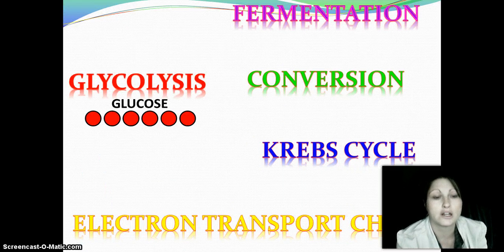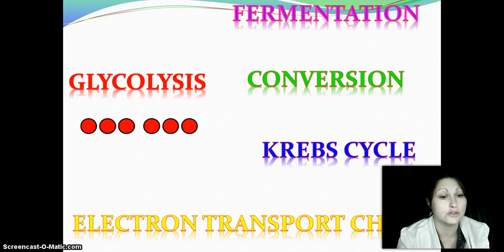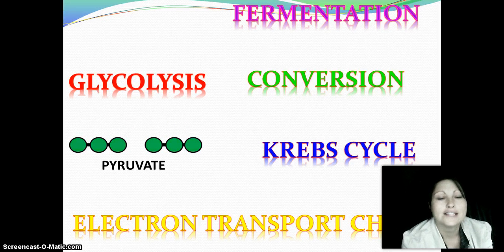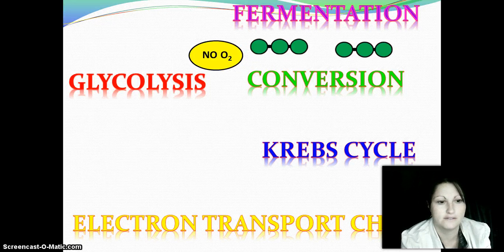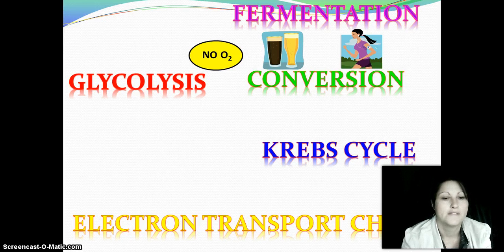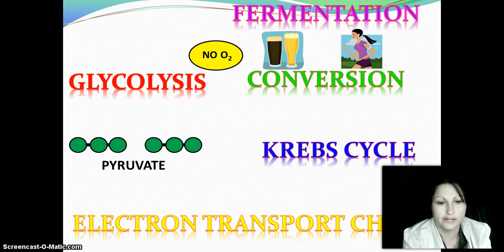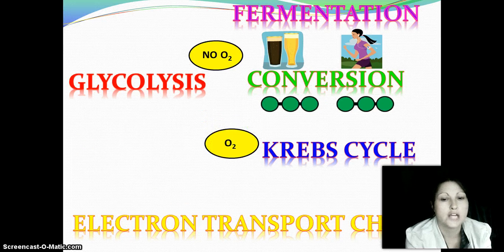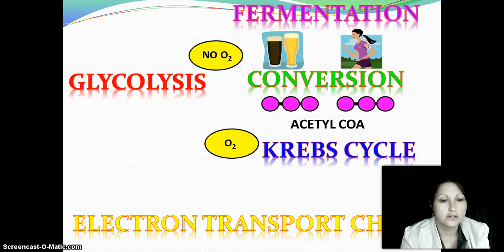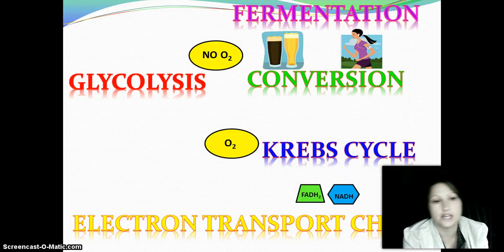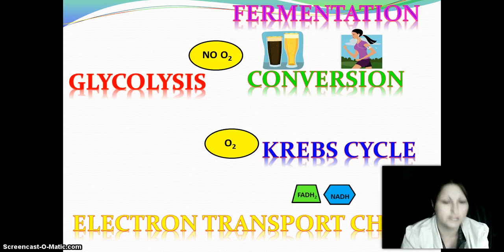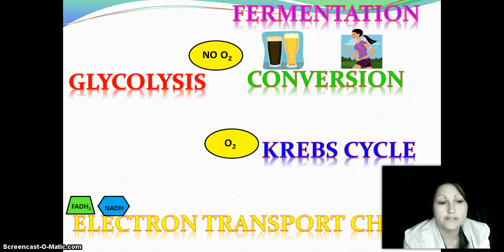Let's review. In glycolysis, glucose is broken down into pyruvate. If we do not have oxygen available, the next step is fermentation. Our two types of fermentation are alcohol and lactic acid. If we do have oxygen available, pyruvate goes on to conversion, where we convert pyruvate into acetyl-CoA. That acetyl-CoA goes next to the Krebs cycle, where we make a lot of FADH2s and NADHs. Those then take their energy to the last step — the electron transport chain — where they exchange that energy for ATP, our cellular energy.